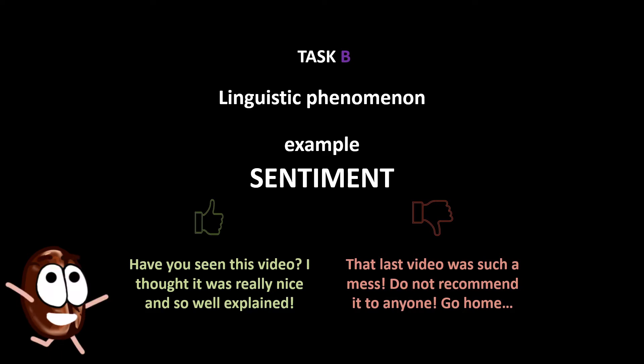The example could be anything else, from the grammaticality of a sentence to natural language inference. Now, back to our original question: How do we check if a neural network trained on task A has learned a phenomenon specific to task B?